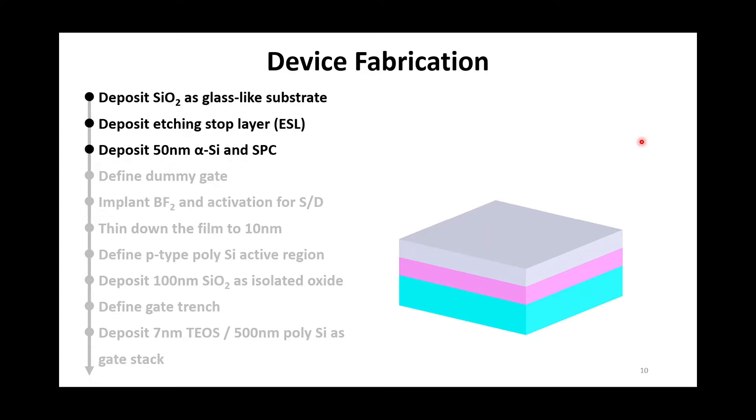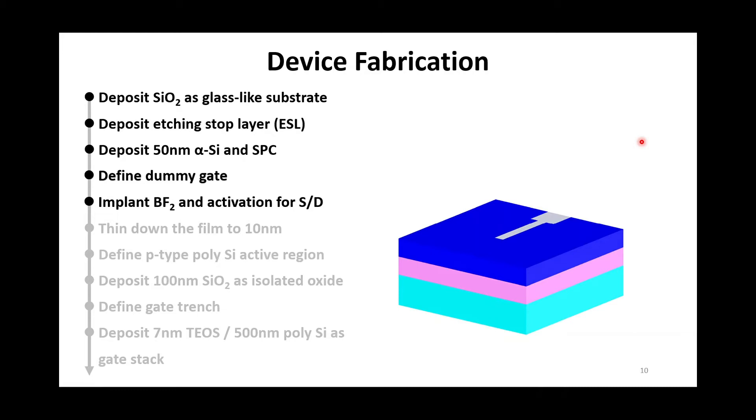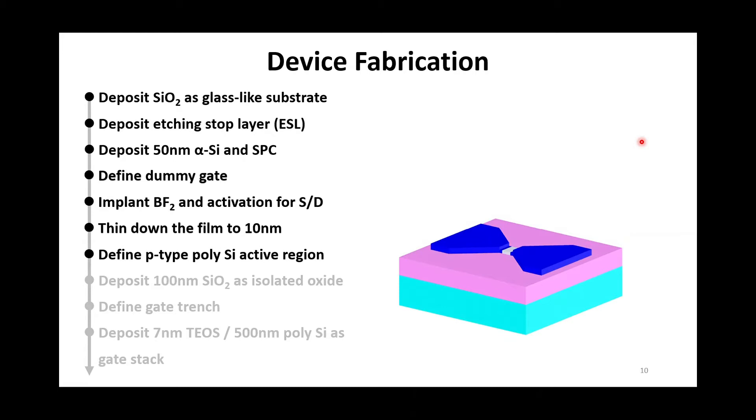After that, the source-drain region was doped by ion implantation and by the following implantation and activation. Then we use dry etching to thin down the film to match the channel thickness we need about 10 nanometer or thinner and pattern active area. Meanwhile, the poly-silicon gate region of IGZO high-frequency device is defined as well.